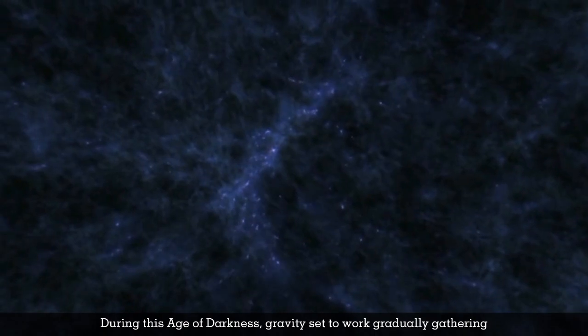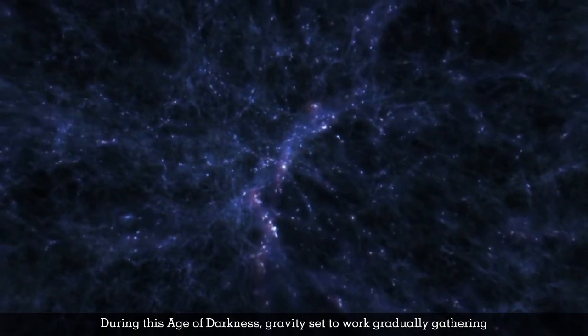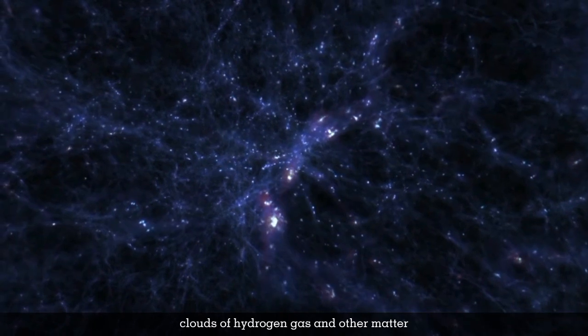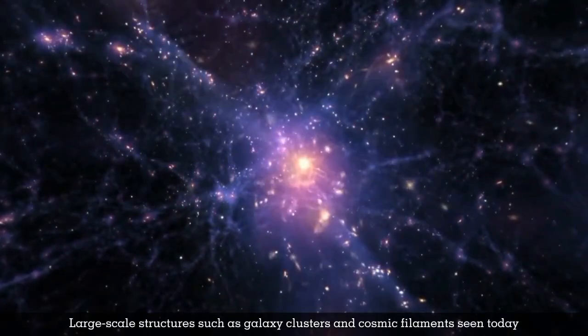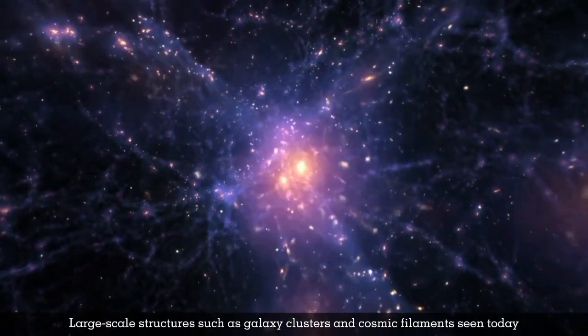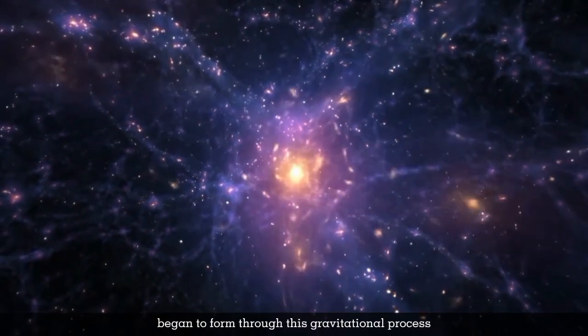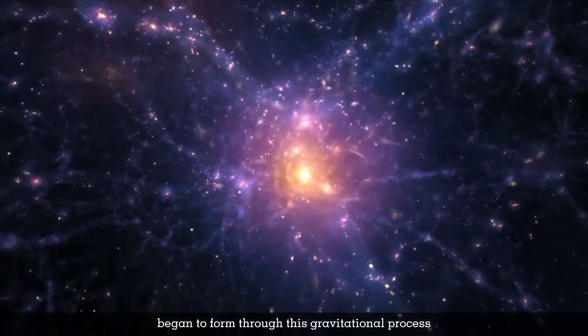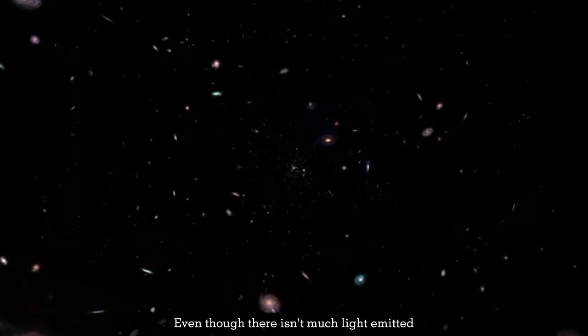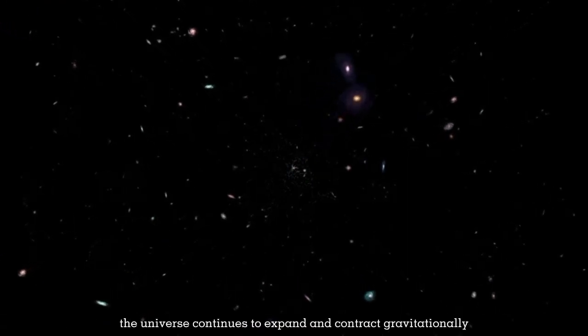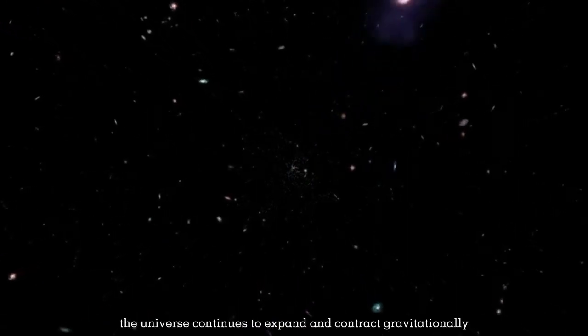During this age of darkness, gravity set to work gradually gathering clouds of hydrogen gas and other matter. However, large-scale structures such as galaxy clusters and cosmic filaments seen today began to form through this gravitational process. Even though there isn't much light emitted, the universe continues to expand and contract gravitationally.